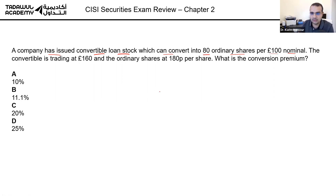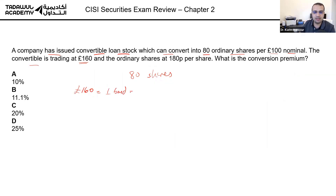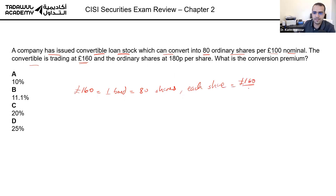If you buy this convertible bond you will get 80 shares when the bond is converted. The convertible is trading at 160 pounds nominal, so paying 160 pounds gives you one bond that converts into 80 shares. Therefore each share is costing you 160 over 80, which is two pounds per share.